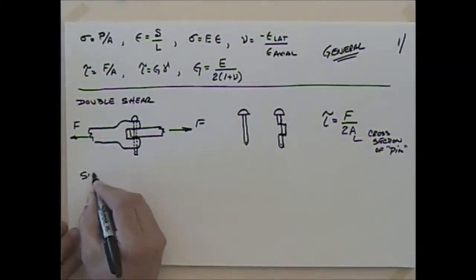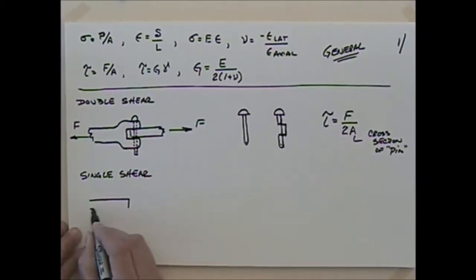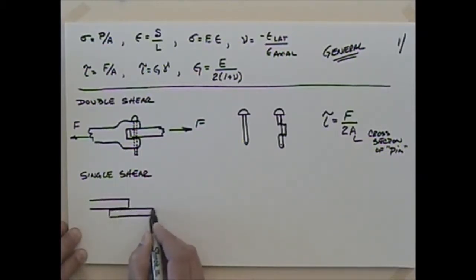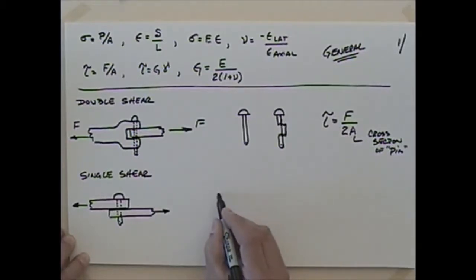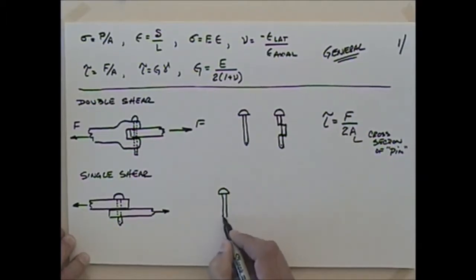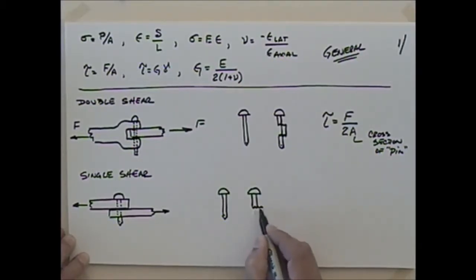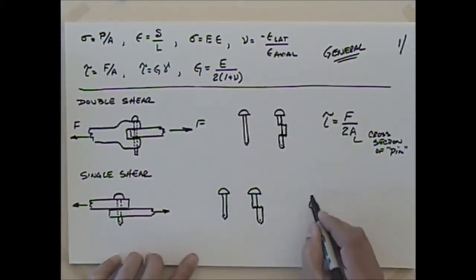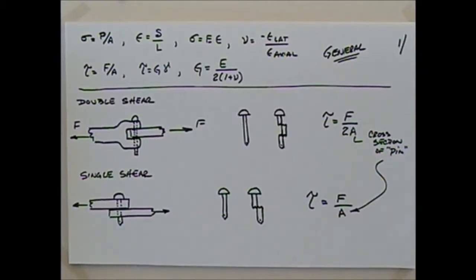Another one that comes up is single shear. Single shear is probably not as good because it introduces a moment since it's not symmetrical. If I put a pin in there, before it fails it looks like one piece, and after it fails it looks like that. The shear stress tau equals the force divided by 1 times A — the force divided by A — where A is the cross-section of that pin.